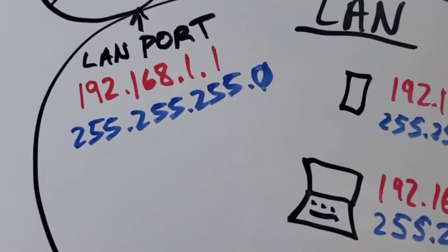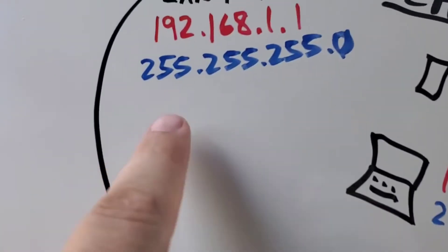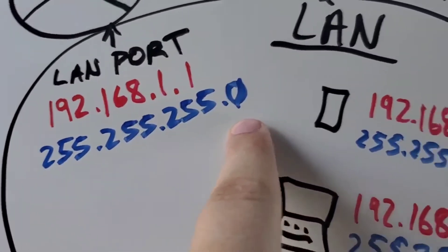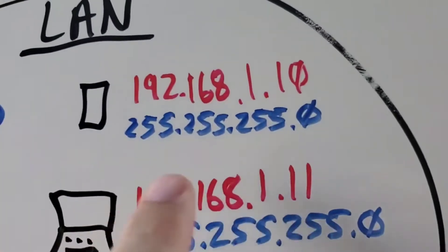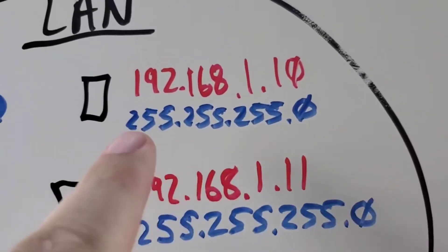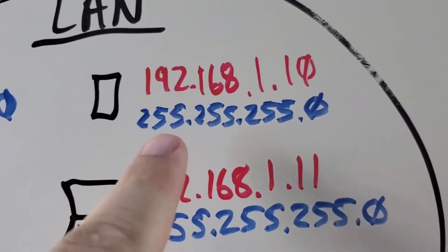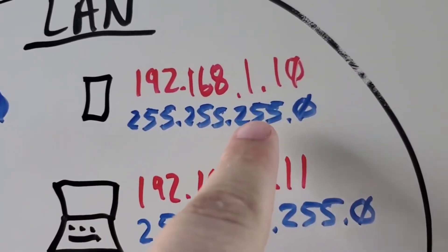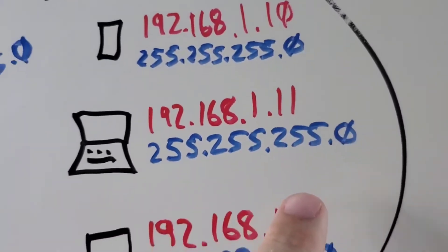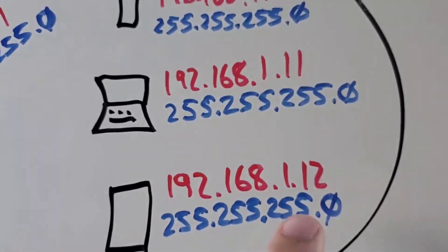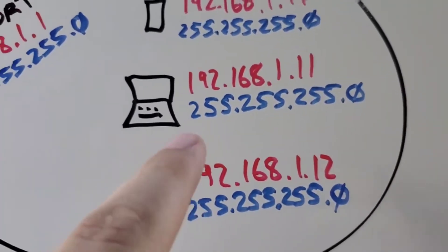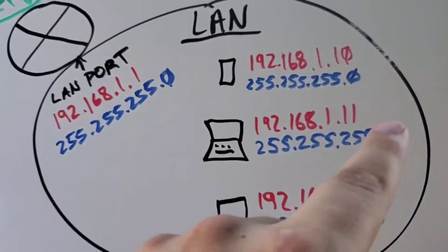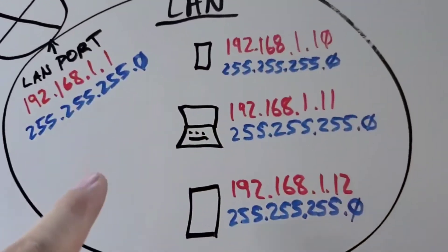It's important that the subnet mask on the router is the same on all your devices. So your subnet mask is going to say 255.255.255.0 on all the devices that are in this network, because that's what's telling them that they're in this network — that's how it is identified.